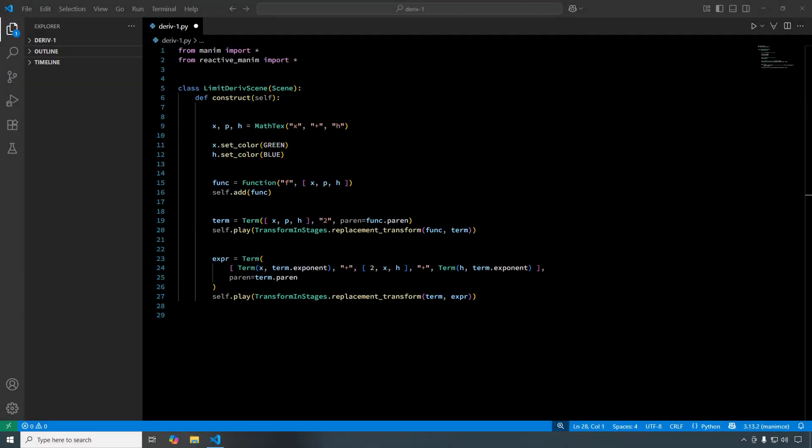Here is the updated code. At line 23 the term that contains the binomial expansion is named xper. We then perform a replacement transform between the previous term component and xper.